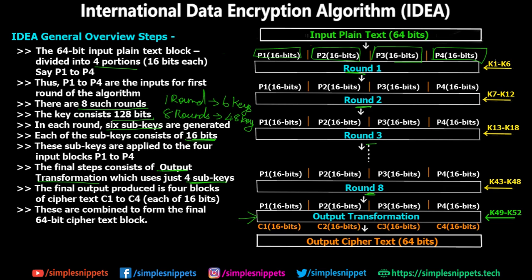For round 1 we use 6 keys K1 to K6. For round 2 we use K7 to K12. For round 3, K13 to K18. For the last round, K43 to K48. For output transformation we need 4 more sub-keys: K49 to K52. So this is the overall process — we'll also see how those keys are formed in a separate slide in this video.